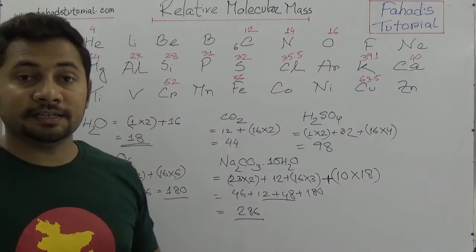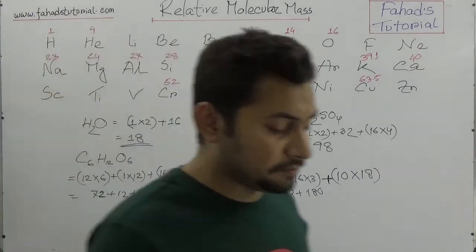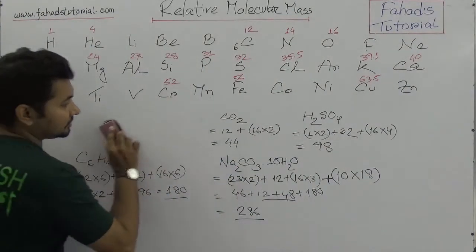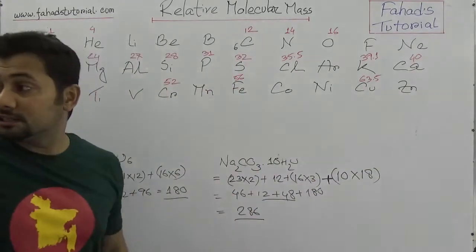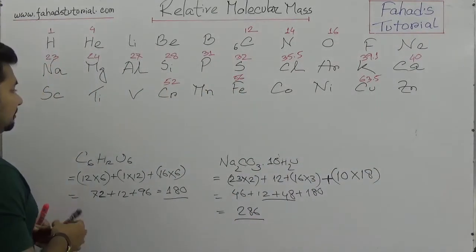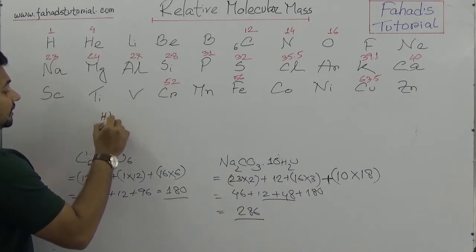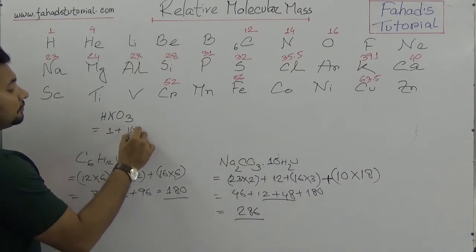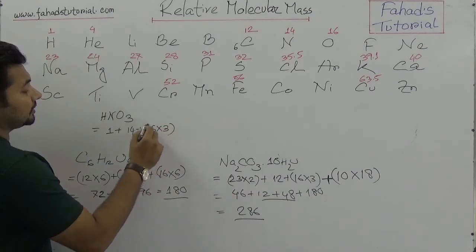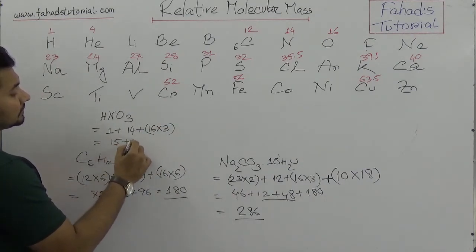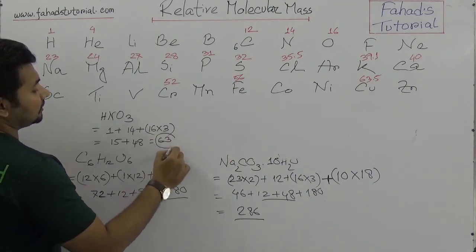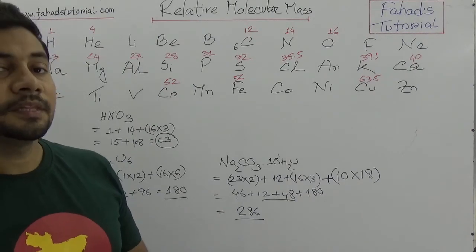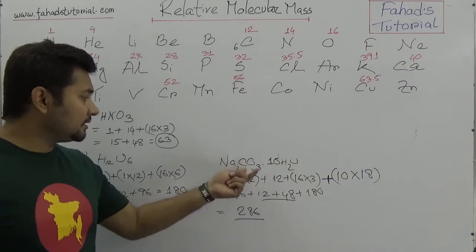This is the way we find the relative molecular mass of different elements and compounds. For nitric acid, HNO₃: hydrogen is 1, nitrogen is 14, and oxygen is 16 times 3 equals 48. So: 1 plus 14 plus 48 equals 63. The relative molecular mass of nitric acid is 63.